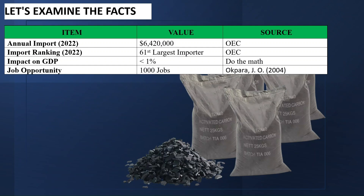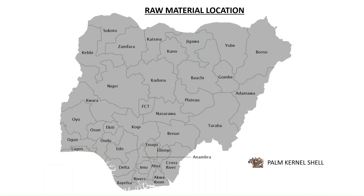Where can we find the required raw materials? The raw materials required for the production of activated carbon can be found in states such as Delta State, Bayelsa State, Akwa Ibom, Cross River, Edo State, Ondo State, Ogun State, Ebonyi State, Oyo State, Osun State, and Enugu State.